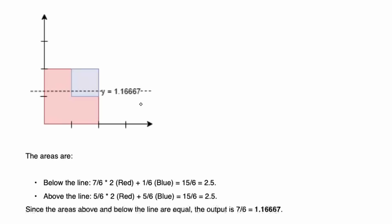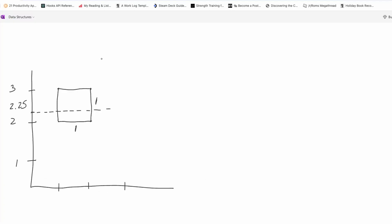1.16667 is the lowest possible line where both above and below have equal area. For the red square, we take 7/6 of its height times 2 to get the area below, plus 1/6 of the blue square, giving us 15/6. Similarly, above the line, we get 5/6 times 2 for the red, and then 5/6 of the blue, which gives us the same exact output.